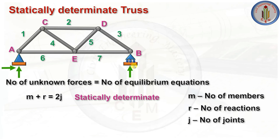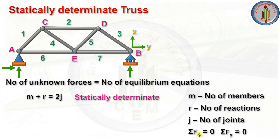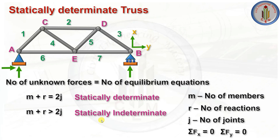If m + r is greater than 2j, the truss is statically indeterminate. If m + r is less than 2j, it is an unstable truss. Let's apply this to our example truss with five joints. The number of members is 7, and the number of reactions is 3 — the hinged support gives 2 reactions and the roller support gives 1 reaction, totaling 3 unknown reactions.